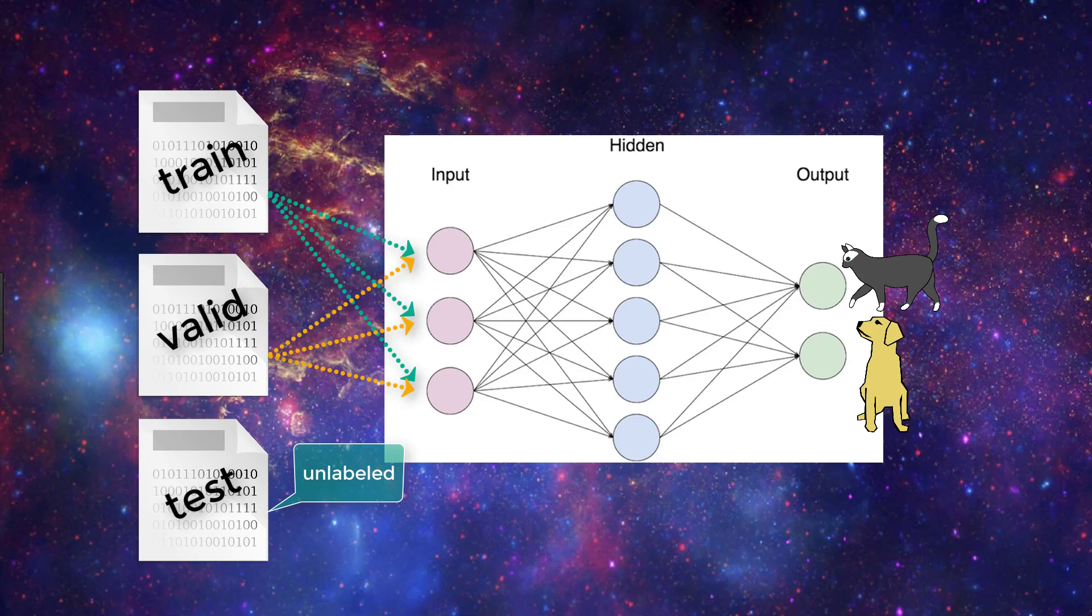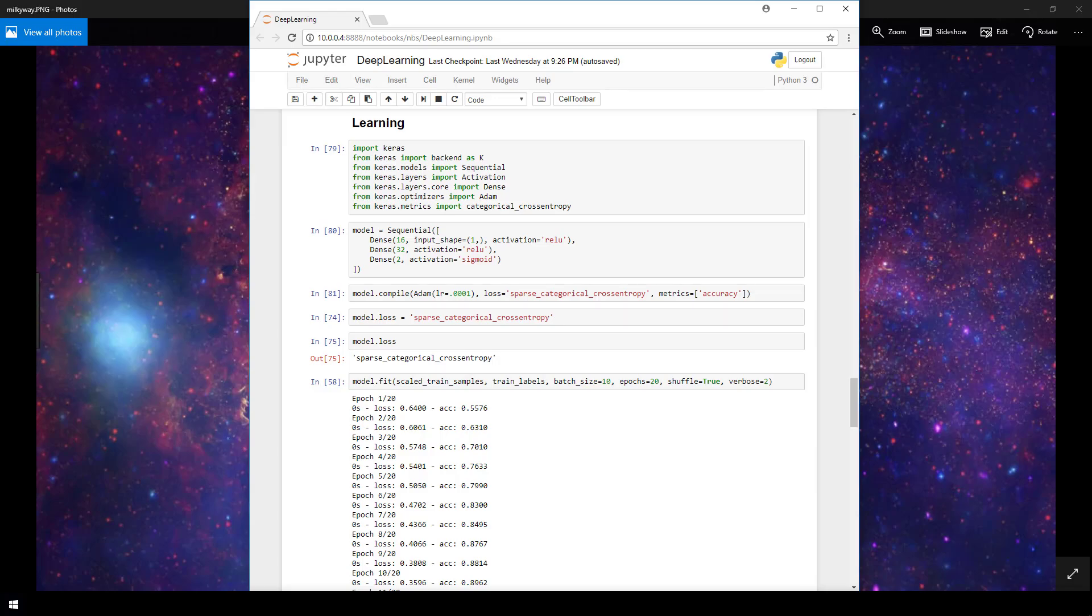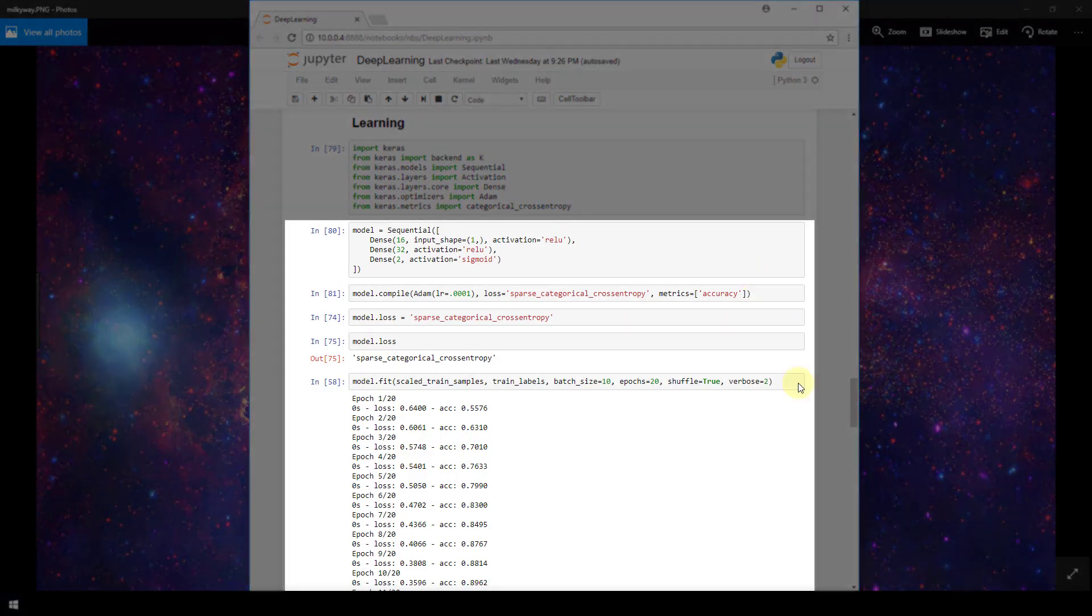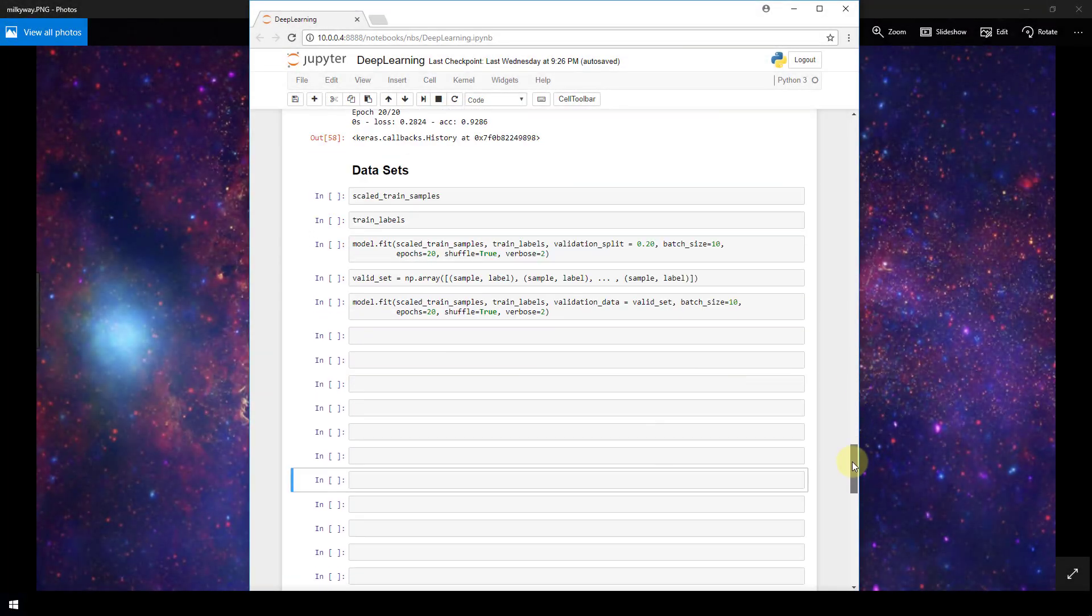Now hopefully we have an idea about how our data should be organized. Let's take a look now at how to structure our data for training our model with Keras. In a previous video, we trained this model shown here using the Keras fit function. Now I'm just going to copy this fit function down to a clean space in our notebook.